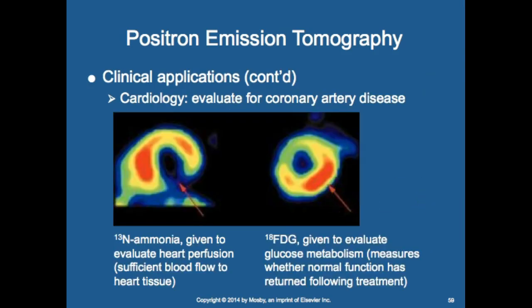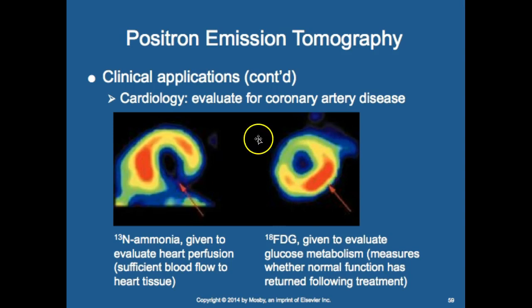For cardiology, PET evaluates coronary artery disease. Ammonia is used to evaluate heart perfusion — sufficient blood flow to heart tissue — and FDG evaluates glucose metabolism to measure whether normal function has returned following treatment. You can see a filling defect that resolves after treatment.